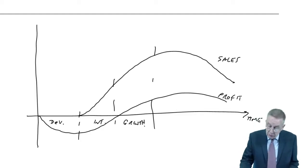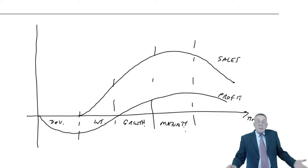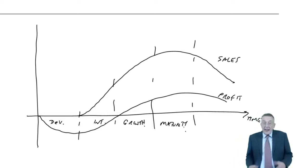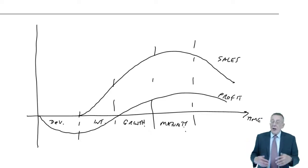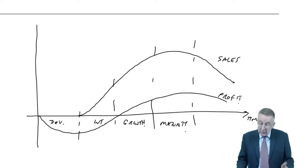Then we enter the maturity stage. When everybody's buying it, that's when we get maximum sales and we get maximum profit. But eventually, new technology will come along and new products will take over. And our product, we enter decline.